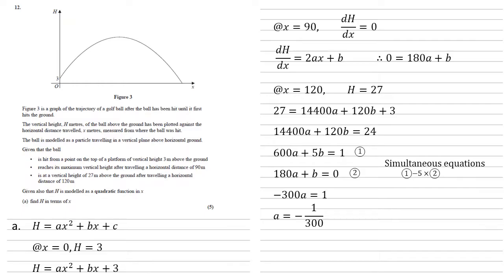From equation two, we can quickly see that b is equal to minus 180a, so minus 180 times by minus 1 over 300 is equal to 3 fifths. So there we have it. Our equation is h equals minus 1 over 300 times x squared plus 3 fifths x plus 3.